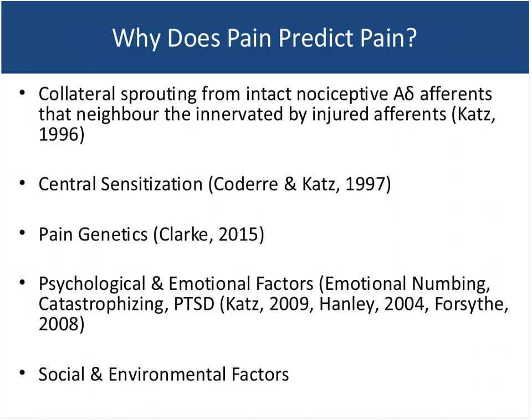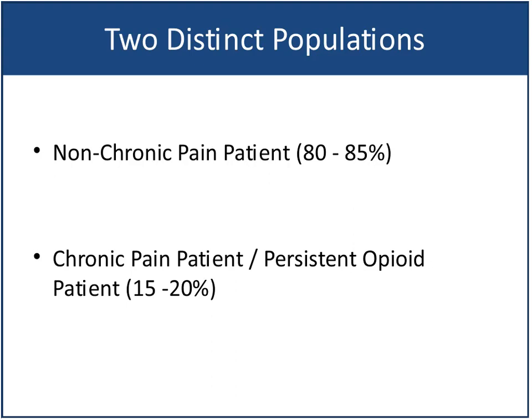There are two distinct populations when dealing with your ERAS-type patients. You have patients who come in without chronic pain and are not on an opioid — probably the majority of your patients — unless they come from an IBD population, where unfortunately the way we care for IBD is fraught with pain-related problems that need correcting. And then you have your 12.5% to 15% of chronic pain patients who persist on opioids.